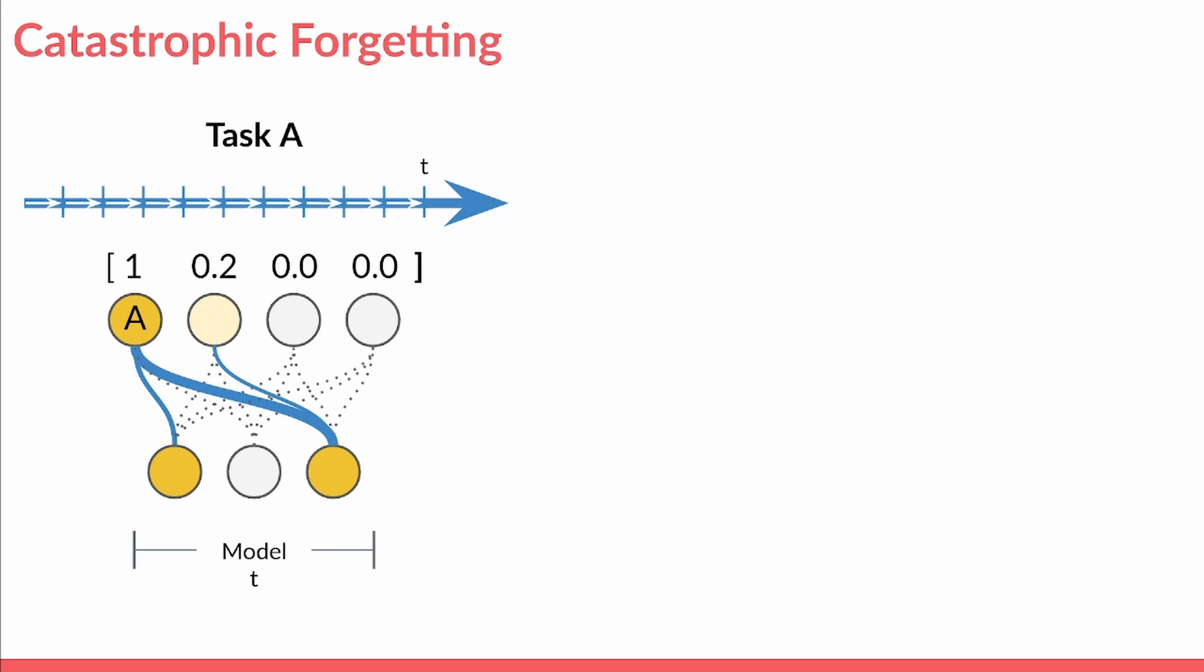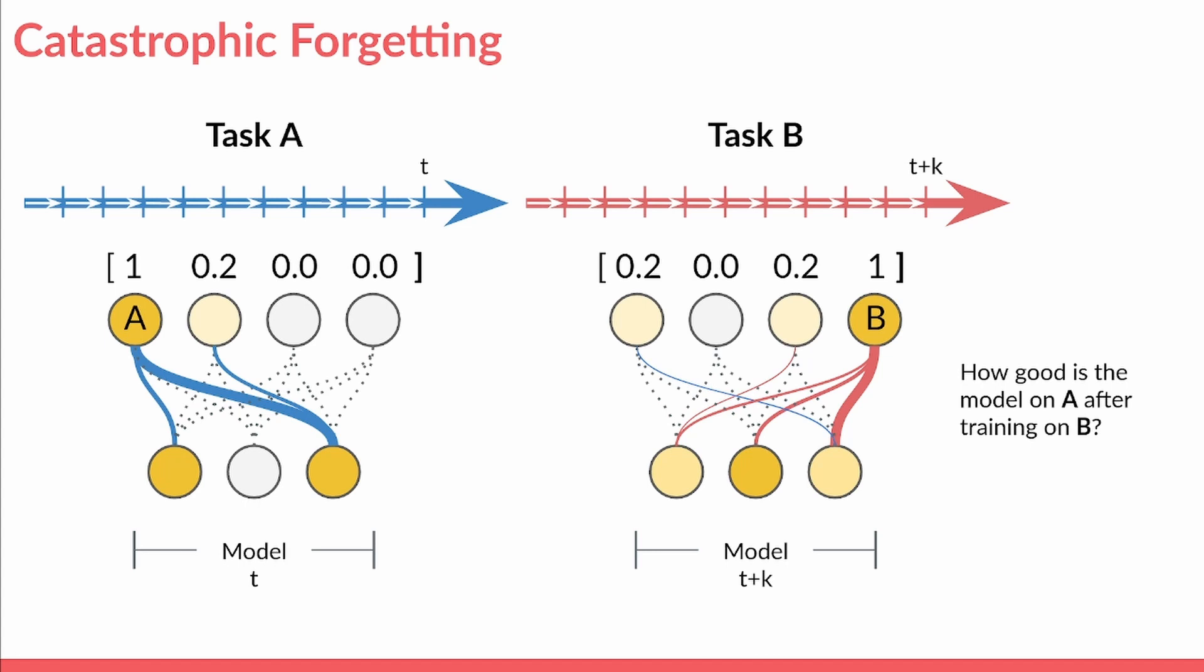The problem we are trying to solve is called catastrophic forgetting, wherein a neural network trained over a sequence of tasks loses its ability to perform previously acquired functions as additional learning occurs. This happens because the weights which encode a function learned earlier in the sequence are overridden by new learning.